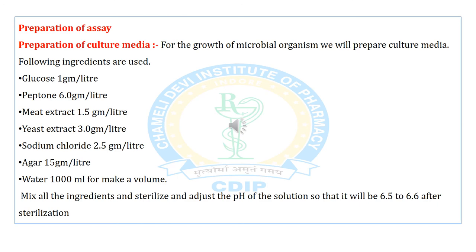The culture media ingredients are: glucose 1 g/L, peptone 6 g/L, wheat extract 1.5 g/L, yeast extract 3.0 g/L, sodium chloride 2.5 g/L, agar 15 g/L, and water 1000 ml to make up volume. Mix all ingredients, sterilize, and adjust the pH so that it will be 6.5 to 6.6 after sterilization.